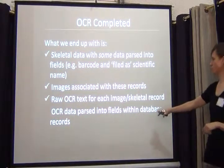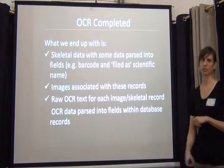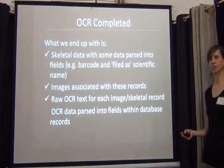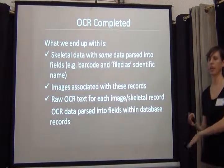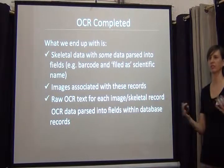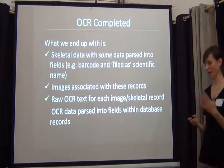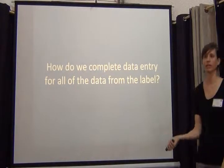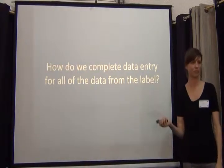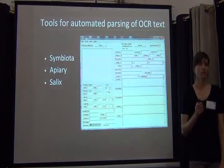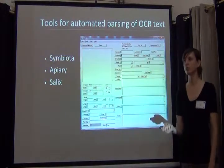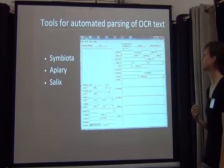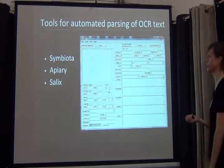But what we don't have at this point is any data parsed into usable text fields. So if you really want to search for a collector and you're just searching all the raw text, you're going to get all sorts of results, and your users are going to have to go through every file. So the next thing we really need to do is figure out how to complete data entry for all these records. There are tools out there that are being developed constantly right now to help us with the automated parsing of text.